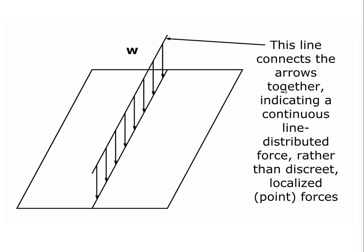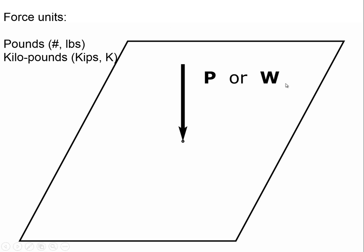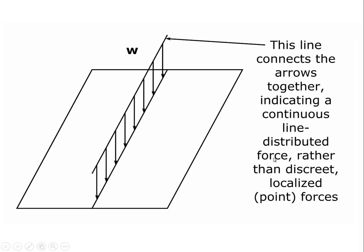We can talk about a line distributed force, which typically might be along the top of a beam, a truss, or any other spanning member. The load along that member is expressed in pounds per foot or kips per foot, and we use the symbol lowercase w. Note the important distinction: uppercase W is a highly localized force, while lowercase w is a line distributed force expressed in pounds per foot or kips per foot.